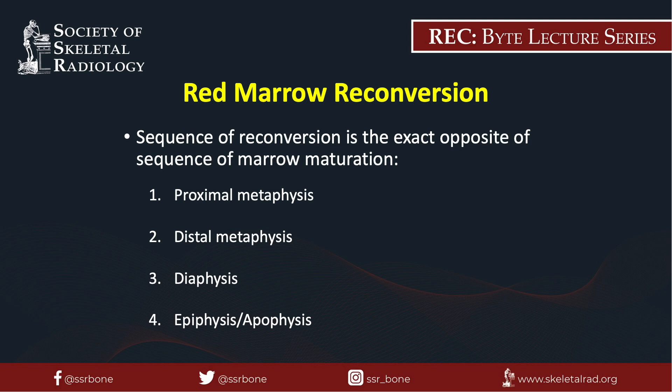The sequence of conversion from yellow marrow to red marrow is the exact opposite of what we saw with marrow maturation. The last site to mature to yellow marrow is the first site to convert back to red marrow. So the proximal metaphysis will convert first, and the epiphysis and apophysis should convert last.